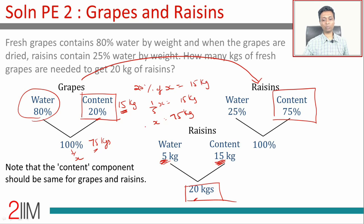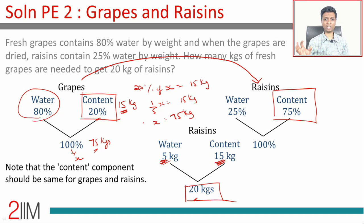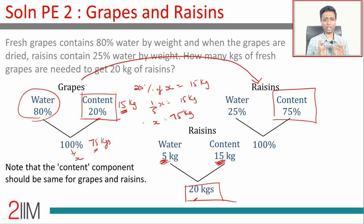75 kilograms of grapes will give you 20 kilograms of raisins. The key idea: whenever you're going from one mixture to another by adding or removing one component, focus on the part that does not change. From grapes to raisins, the kilograms of content remain exactly the same — only water is removed. Anchor your solution around that constant part.